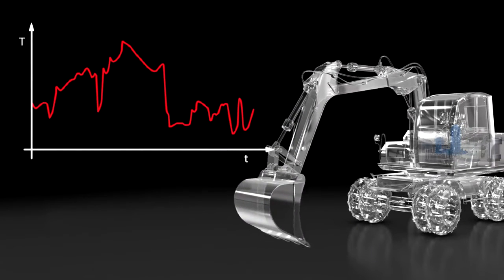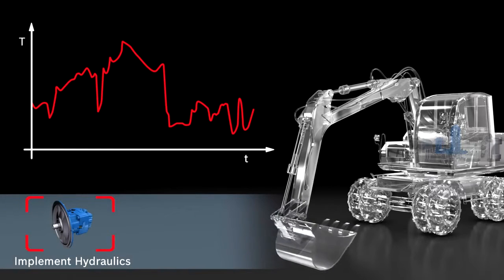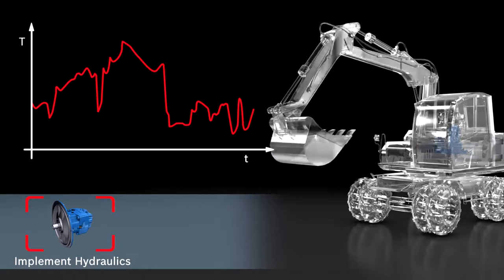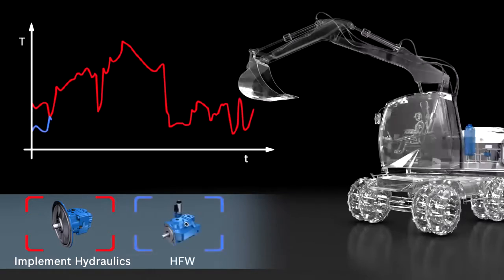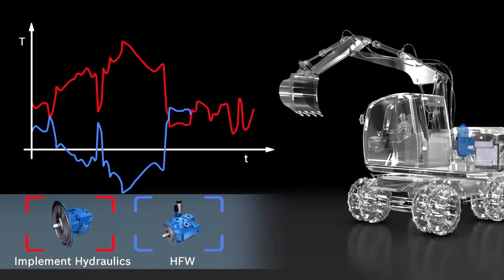There are now two principal systems operating at the combustion engine. One is the implement hydraulics, which primarily influences the load on the combustion engine. And the other is the HFW, which can influence the load but also provides the drive torque.